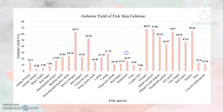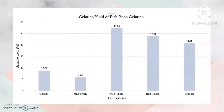Results and discussion: The percentage yield of gelatin extracted from fish skin was highest for grouper at 68.47%, and lowest for Atlantic salmon skin gelatin at 4.38%. For fish bone gelatin, Nile Tilapia produced the highest gelatin yield at 54.56%, while Nile perch produced 11.5%.